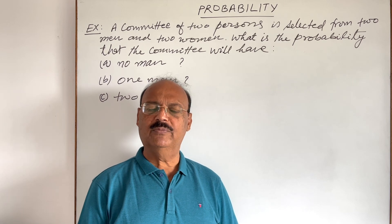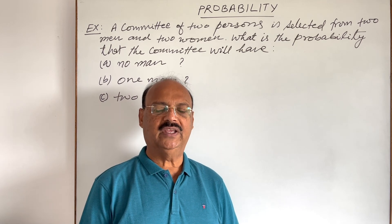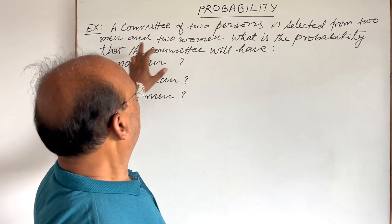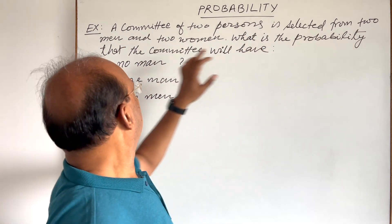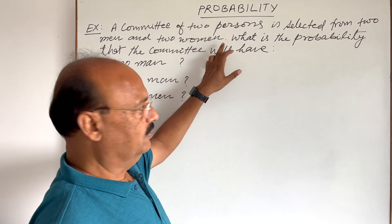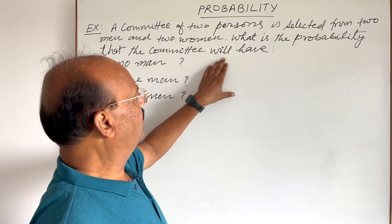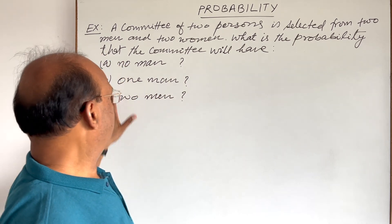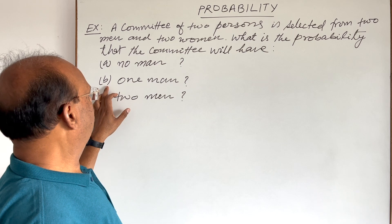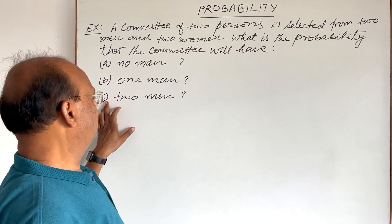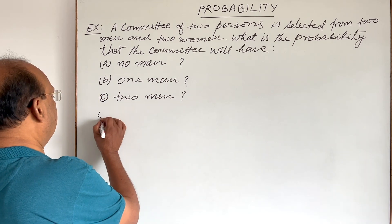Welcome students. Let us see a very important question from the topic probability. The question is: a committee of two persons is selected from two men and two women. What is the probability that the committee will have — three parts of the questions are here: A) no man, B) one man, and C) two men.